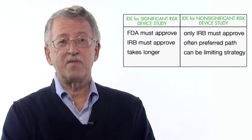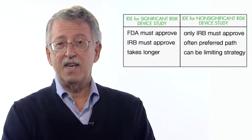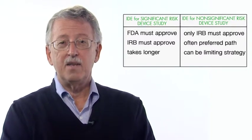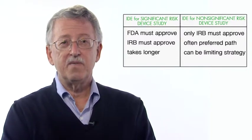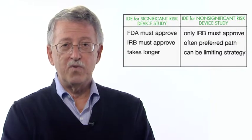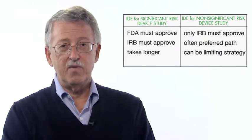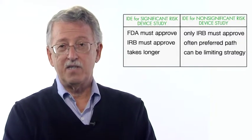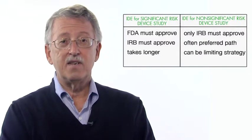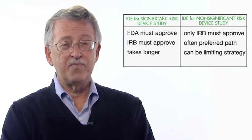Importantly, there are two types of IDEs: a significant risk IDE and a non-significant risk IDE. The principal difference is that significant risk devices must be approved by FDA and by an institutional review board at the hospital where the study will be conducted. Non-significant risk devices only require IRB approval.